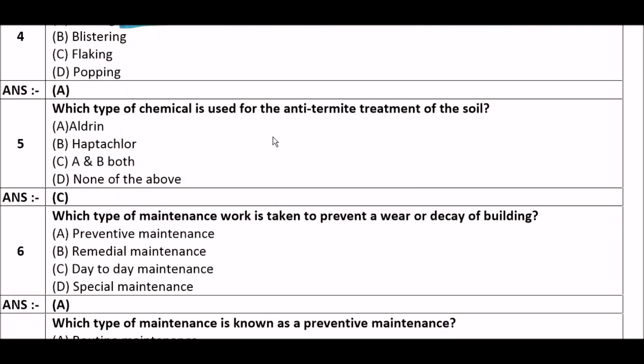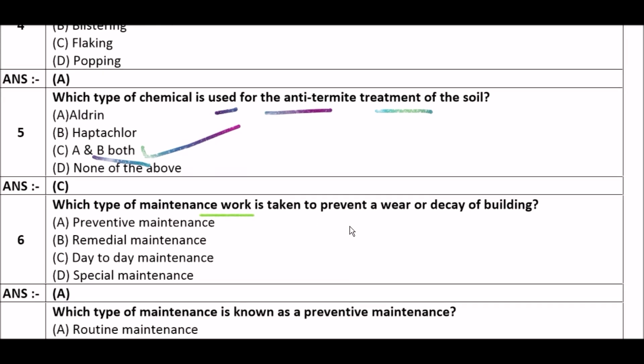Next question: Which type of chemical is used for the anti-termite treatment of the soil? Option A: alderan, option B: hapticella, option C: A and B both, option D: none of the above. The right answer is option C — A and B both. Alderan and hapticella are both chemicals used for anti-termite treatment of the soil.